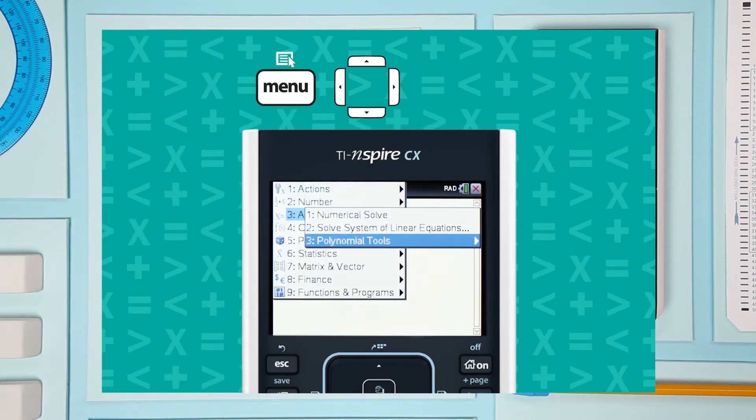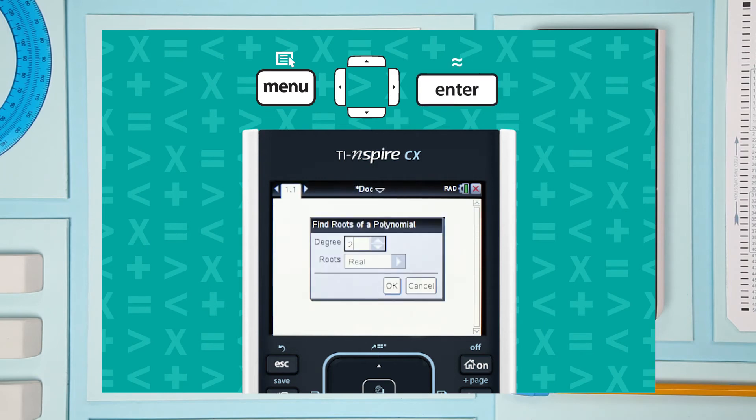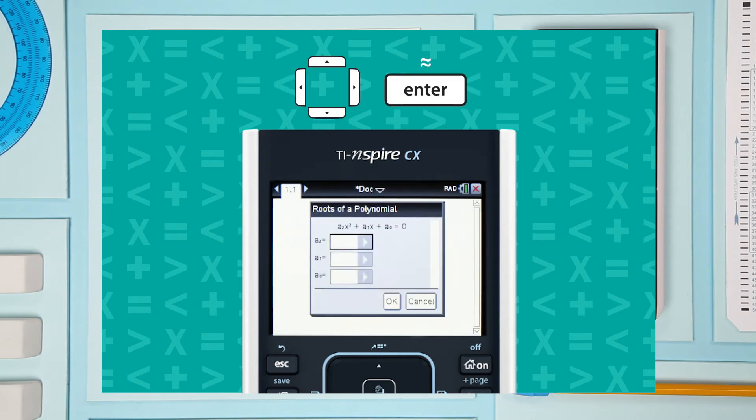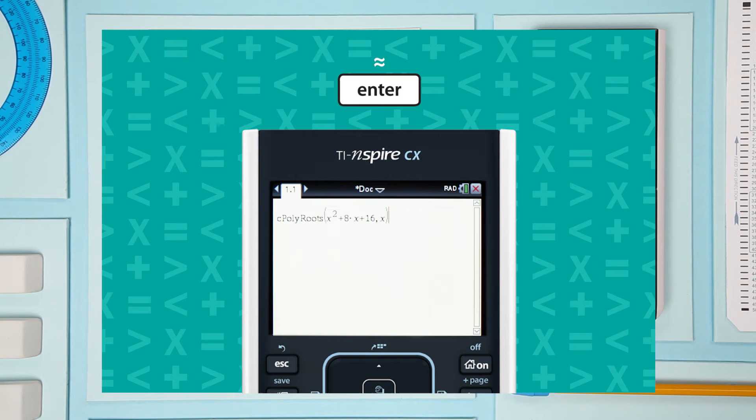Select algebra, then polynomial tools. Keep the degree 2. Choose complex. OK. Enter the coefficients 1, 8, and 16. OK. There's your equation. And there are the roots.